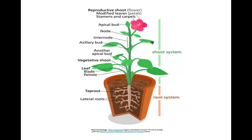The apical bud is where the shoot apical meristem is located. The area on the stem where a leaf attaches is termed the node, and the region along the stem between the nodes is termed the internode. Axillary buds are formed in the axil of a leaf; when they develop, the plant is much fuller. The leaf is the primary photosynthetic organ and is made up of the blade and the petiole, which is the stalk that attaches the organ to the stem.